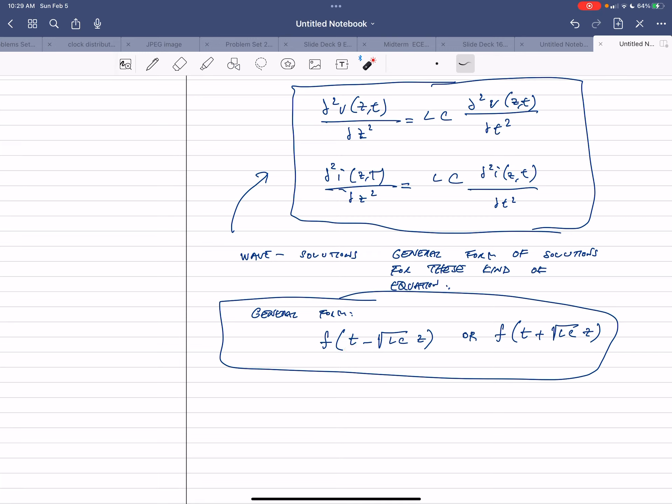But it's always a function of something like t, time, minus some constant. In this case, it's a square root of LC because we have LC in our equations, times distance. So it's sort of relating this traveling thing in terms of something that changes. As time changes, distance also, the location also changes. So let's use an example to look at it.